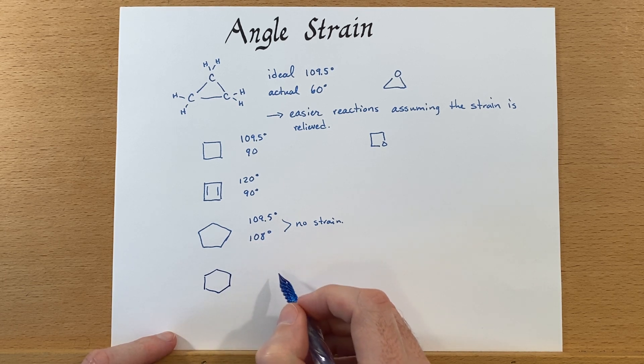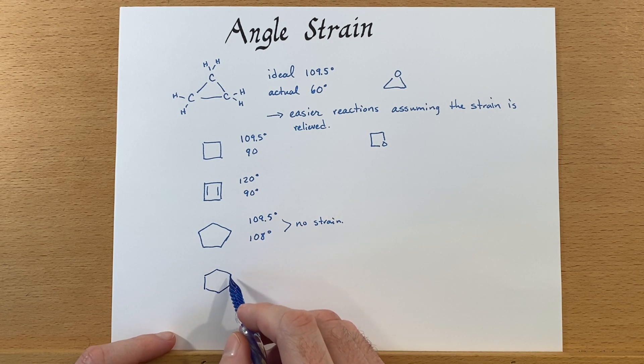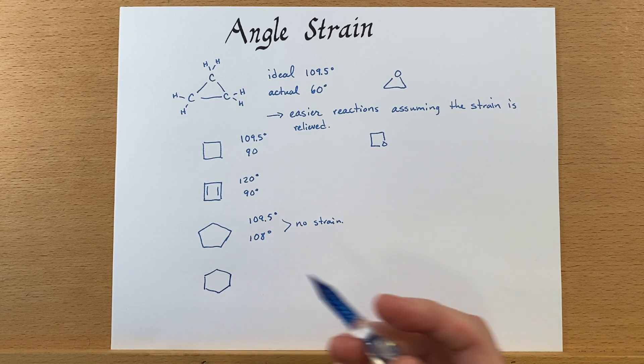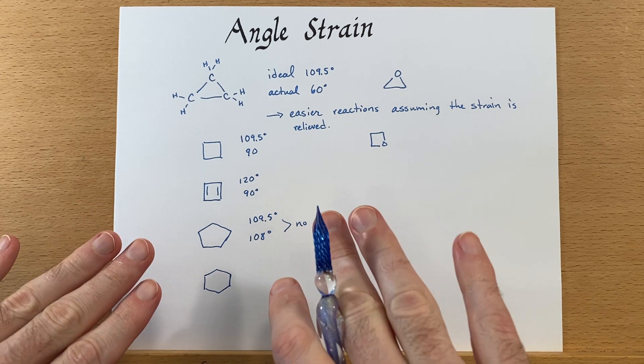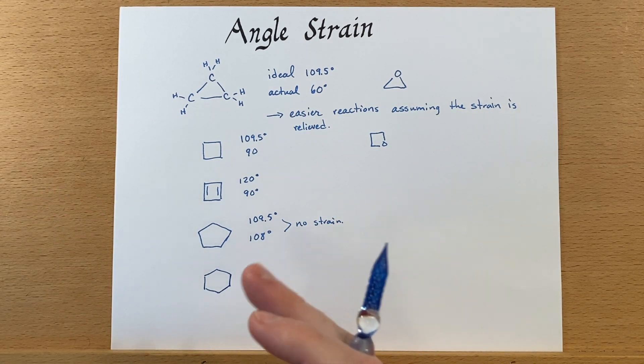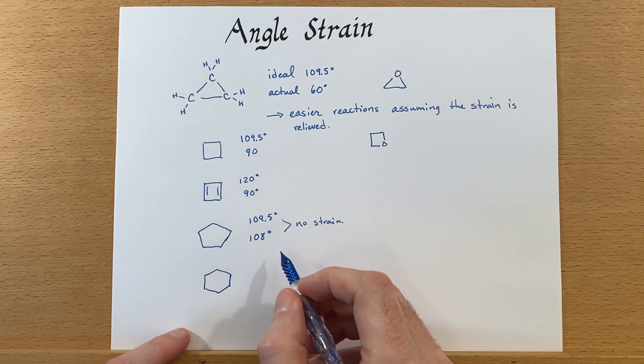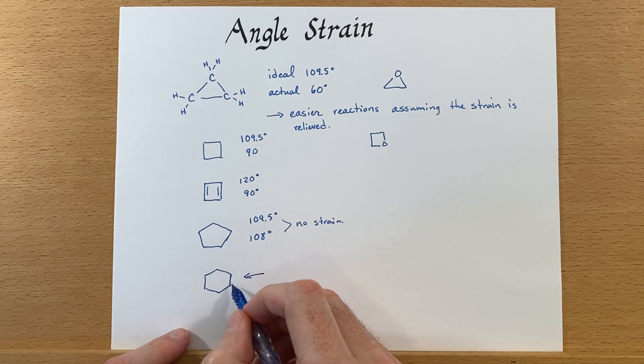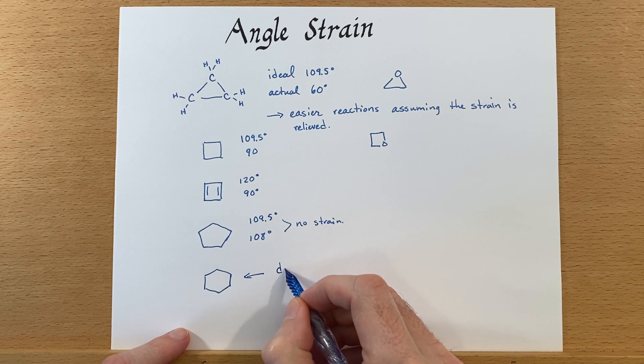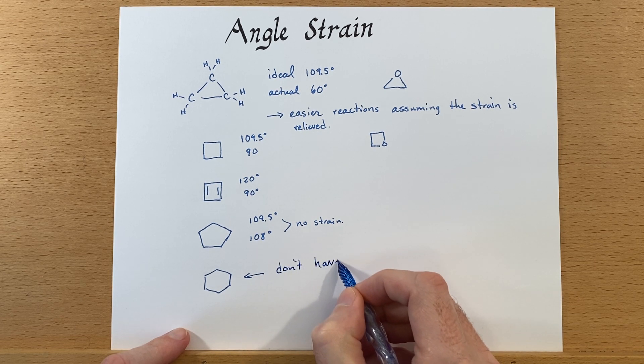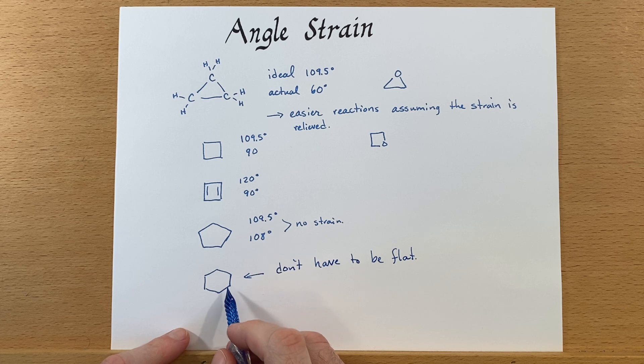Now, a six-membered ring would have a larger angle than what we would desire, but it's big enough that it doesn't have to be a flat ring. It will distort a little bit. You might have heard of chair and boat configurations and different things and we'll talk about those later, but larger rings like starting at six members don't have to be flat.